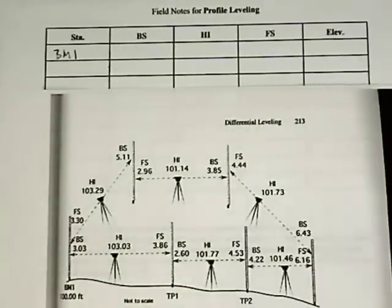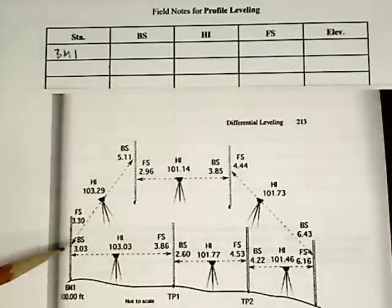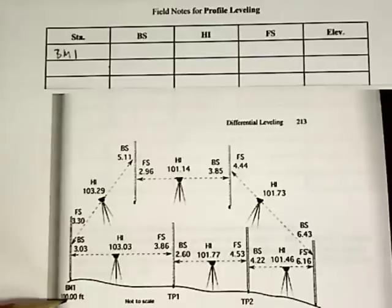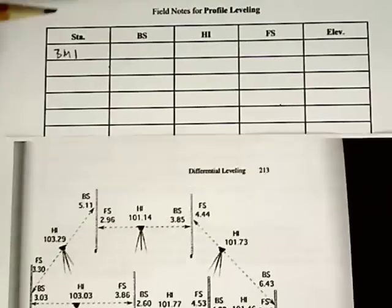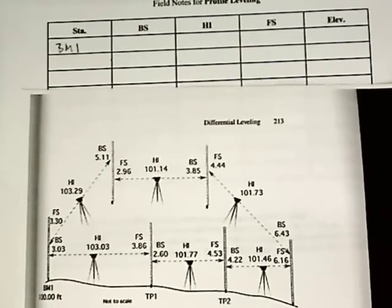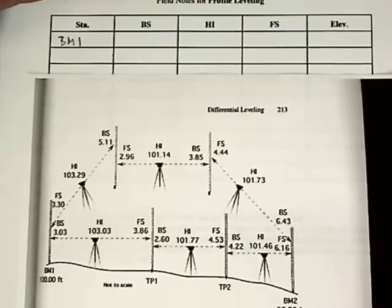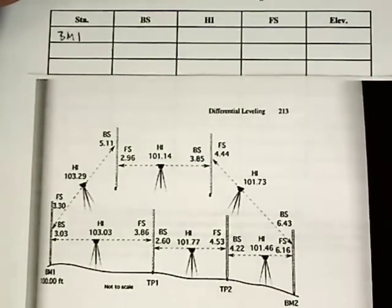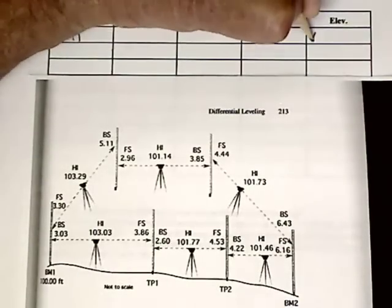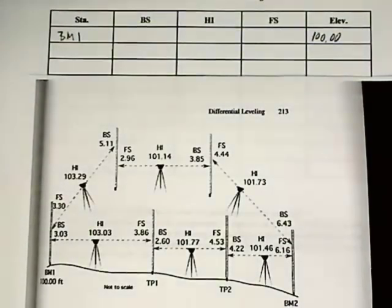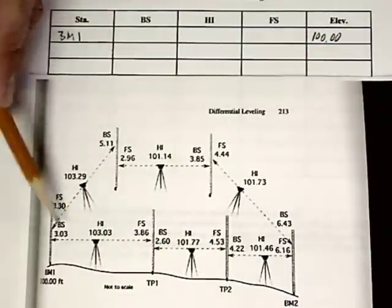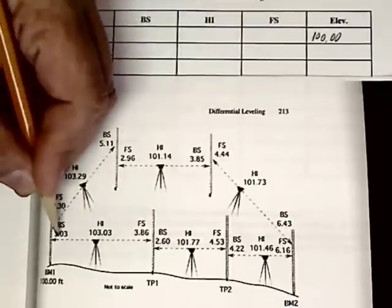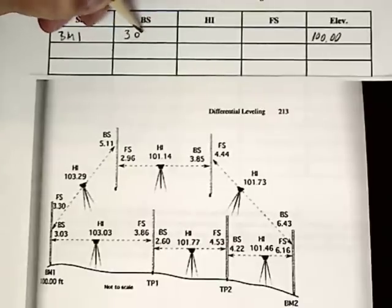Now we're going to actually complete our survey, starting at benchmark 1. The assumed elevation is 100 feet. So we go to our field notes — I've got the whole sheet here, but I'm going to stack our actual survey on top of it so we can refer to both at the same time. Benchmark 1 elevation is 100.00 feet. Then we take a back sight reading, which is on the known elevation, and we write down our rod reading of 3.03 feet.